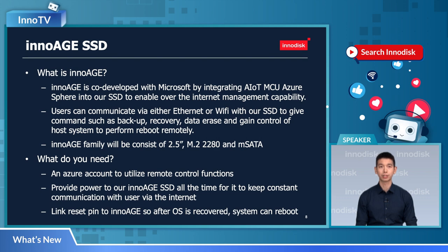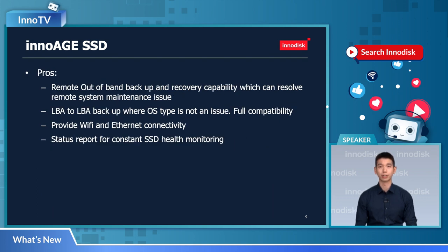Lastly, InnoH includes a remote reset ping capability. If your OS is damaged and recovered through InnoH features, the disk has the capability to reboot your whole system, making everything normal again. The major advantages of InnoH SSD include: remote out-of-band backup and recovery capability to resolve remote system maintenance issues; LBA-to-LBA backup where OS type is not an issue; Wi-Fi or Ethernet connectivity; and status reporting of SSD health and overall system sturdiness through the Azure Sphere connection.